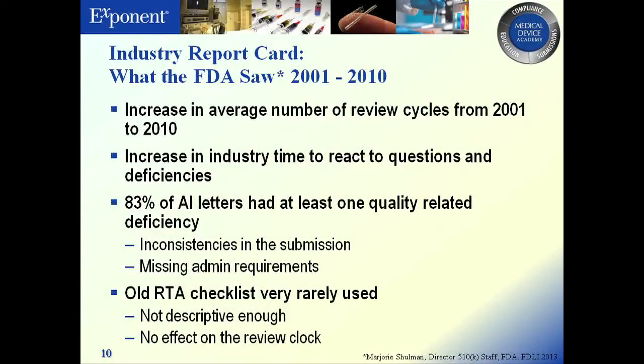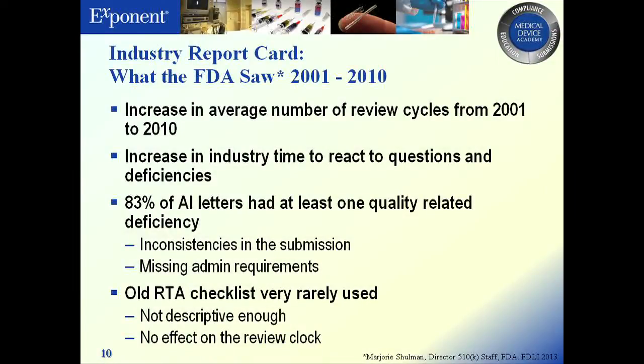Politics aside, this is the data FDA saw. They looked back at industry for about ten years and saw an increase in the average number of review cycles — as far as they were concerned, industry was getting worse and worse because they had to intervene more and more. Our reaction time slowed down — if we got 180 days, at 179.5 days we would come back, so obviously it was industry's fault that innovation was slowed down. The third point is that over 80% of the AI letters involved inconsistencies in the submission or missing administrative requirements — a pretty big number that was leveraged to justify this initiative.